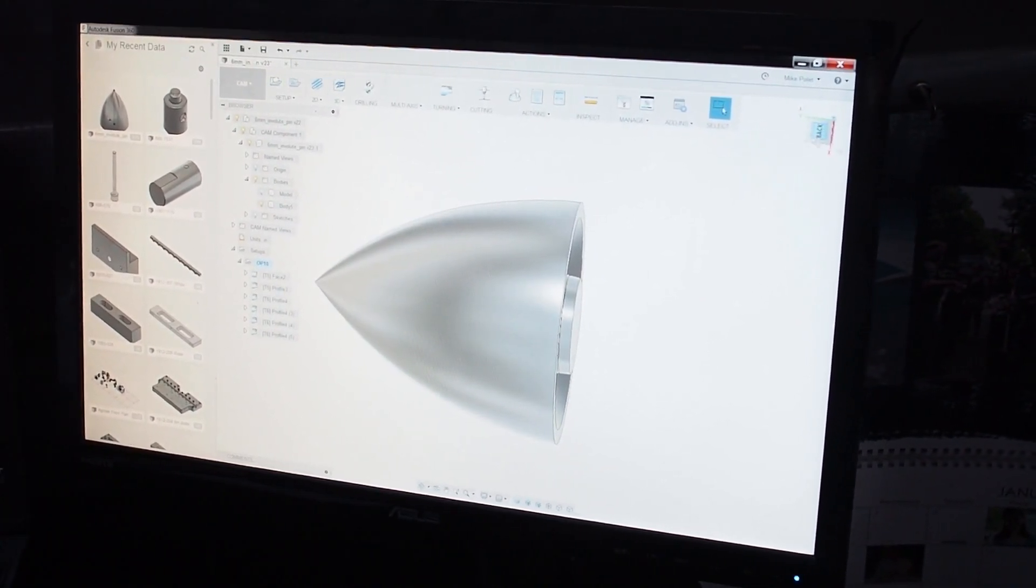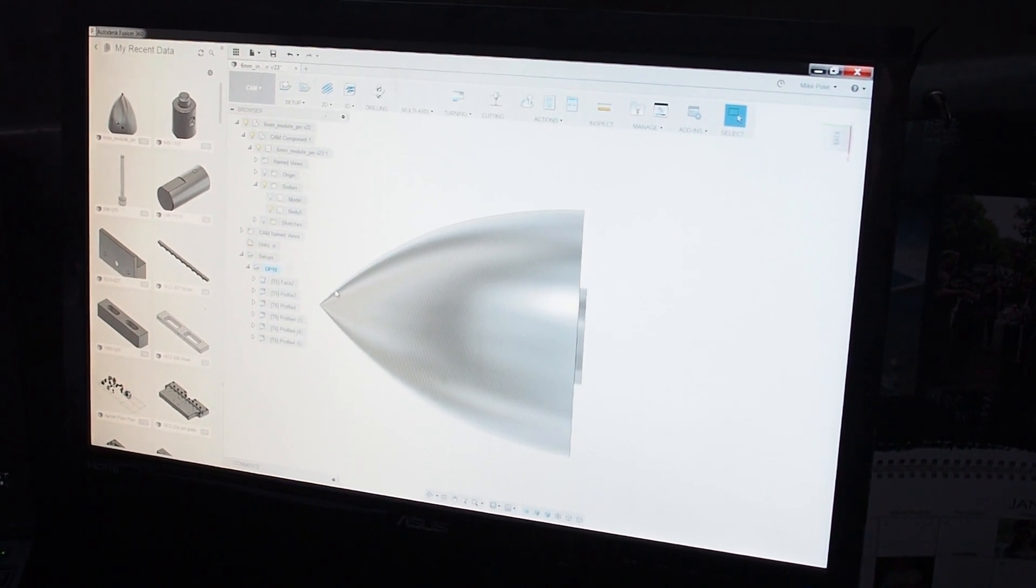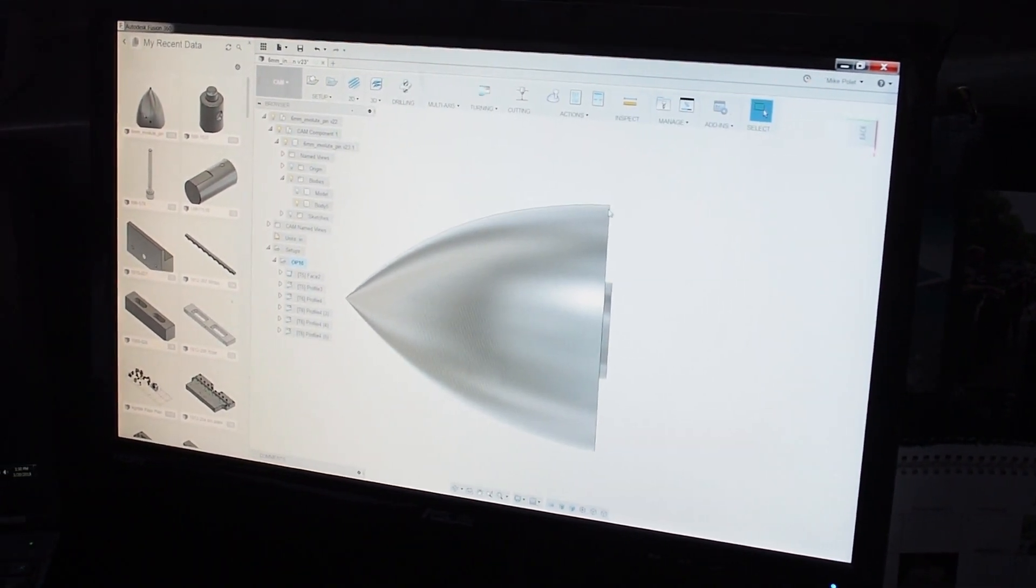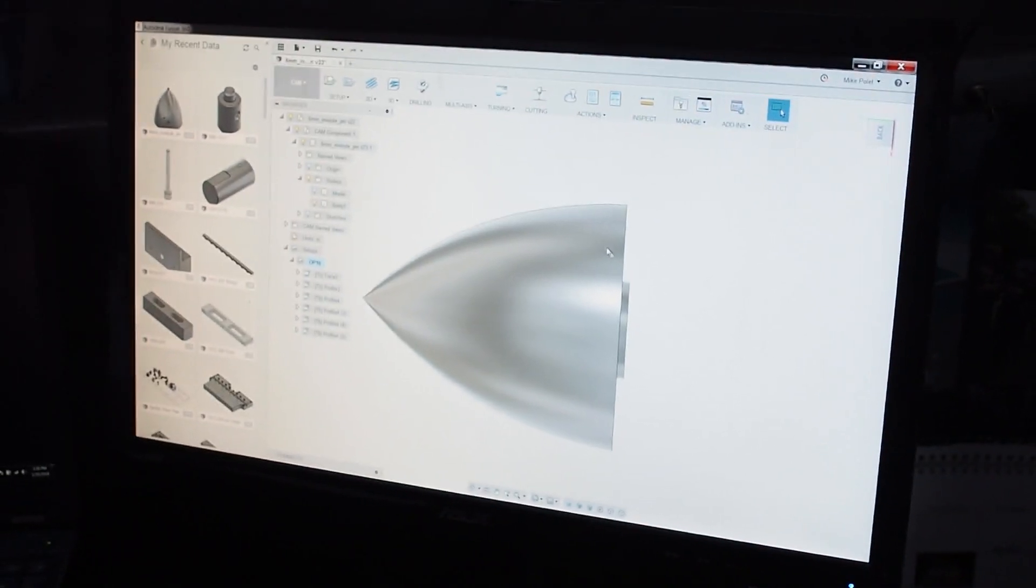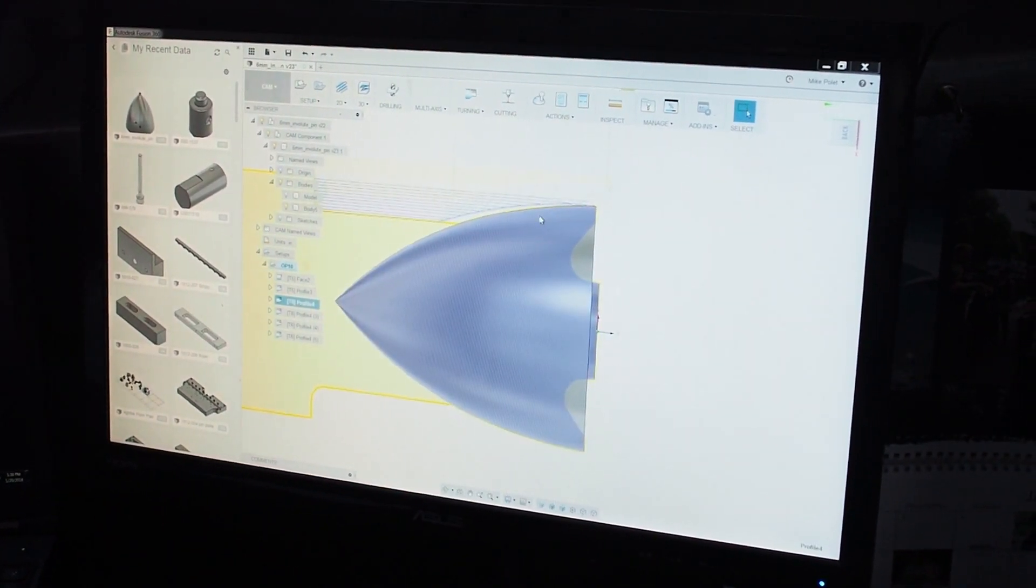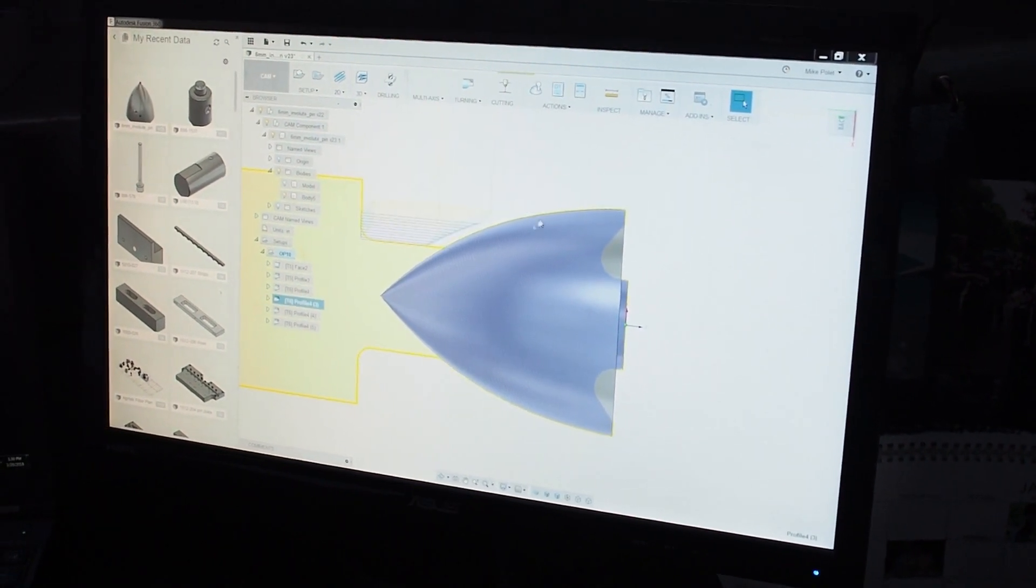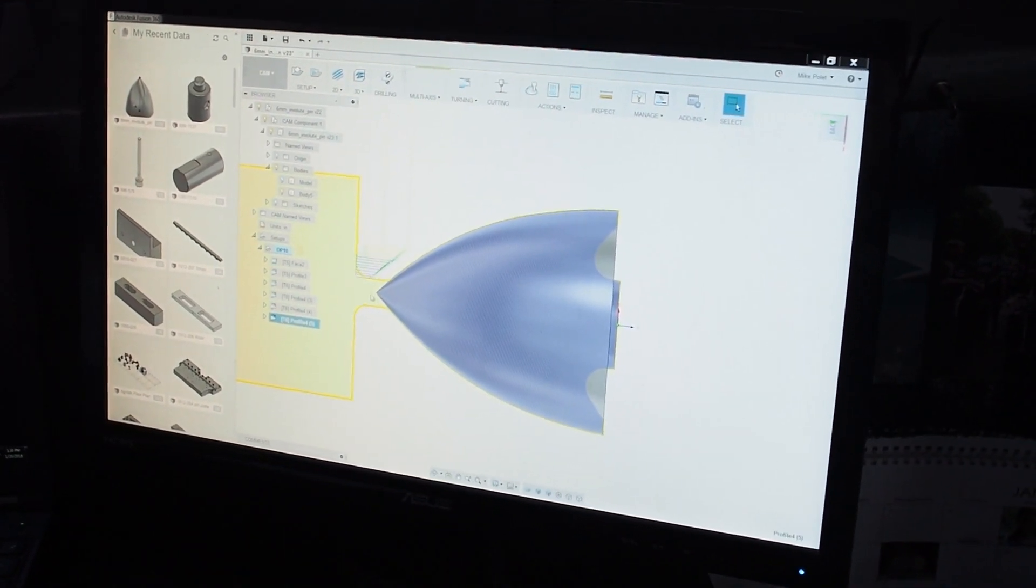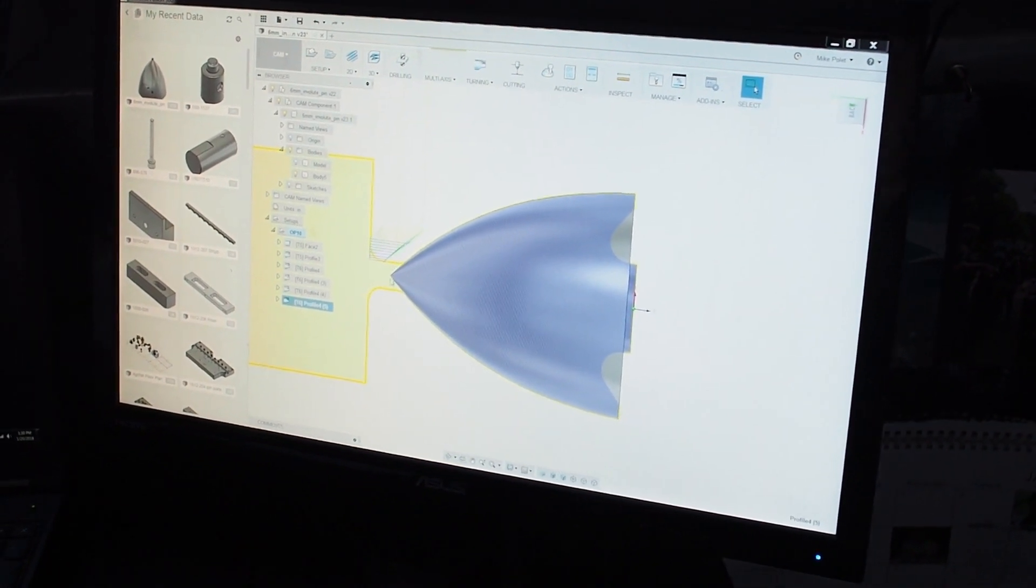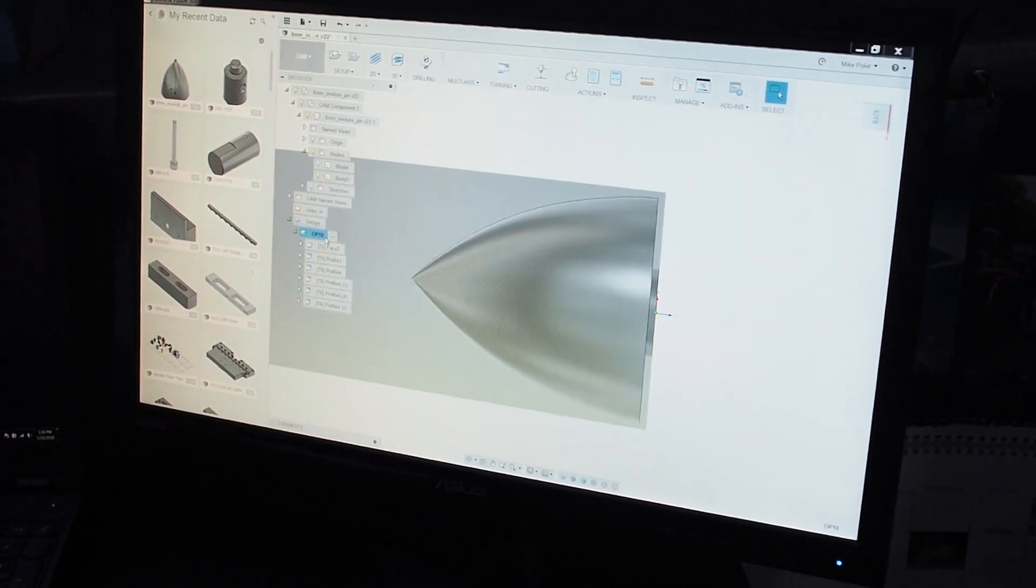One of the other issues I had with my original program was I was trying to do this whole profile and just leave myself a little bit down here to kind of hold on to. But as that finishing pass is coming down here, my part's probably wobbling around. So what I'm doing now is I'm taking multiple steps, stepping it down. So we'll do this, finish it, and then we'll do that, finish it, do that, finish it. And then when I get down to here, this little part doesn't matter because it's going to come off on the grinder anyway. That's where I got to in the program. Posted it to the machine.